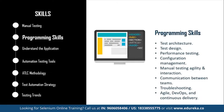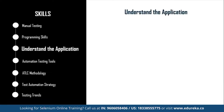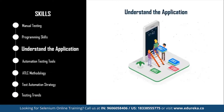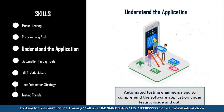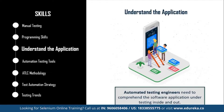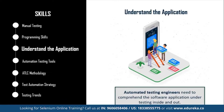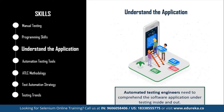The next step is to understand the application. The common details every automation tester needs to know include which programming languages were used to develop the application, on what platform it is built, which databases are involved, whether there are web services or APIs connected to different parts of the system, and more. These are just a few points and may vary based on the complexity of the application, so make sure you are completely thorough with it.